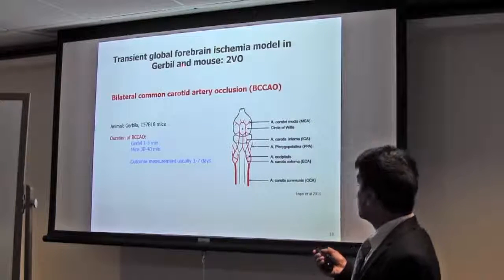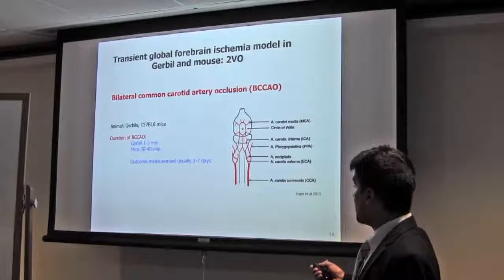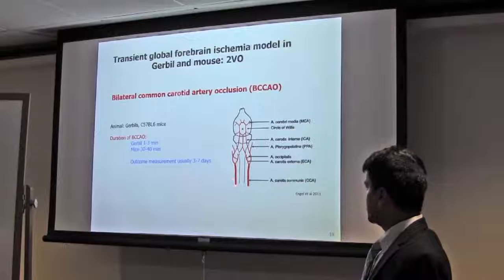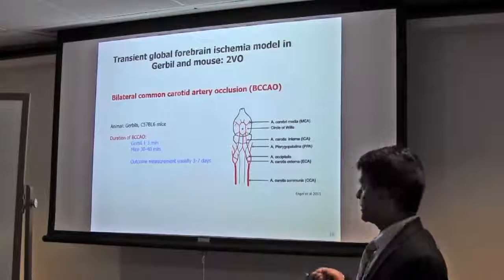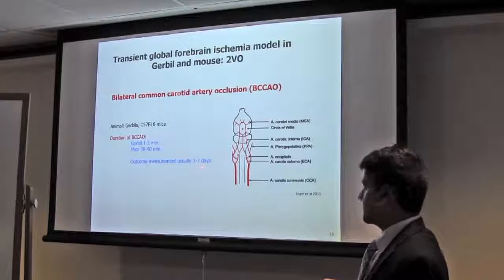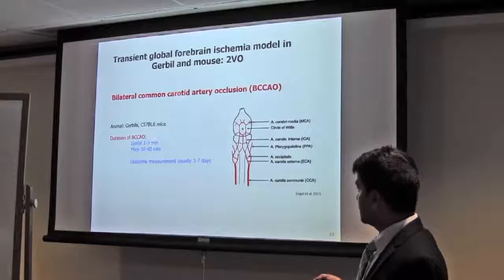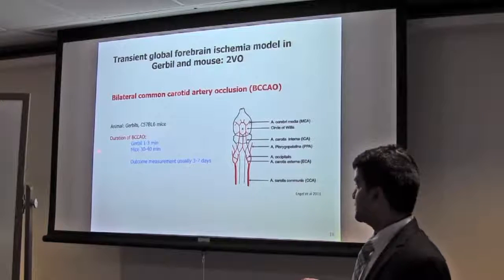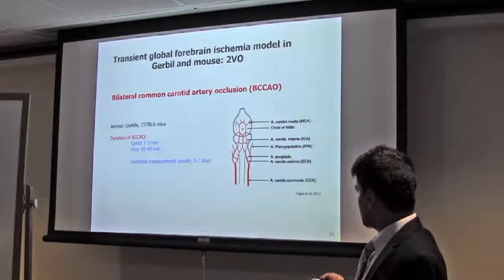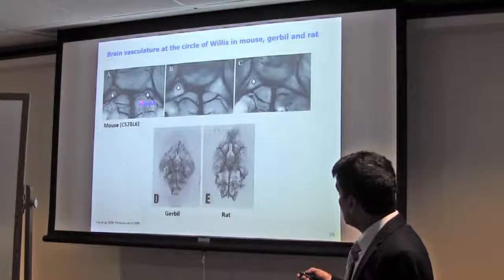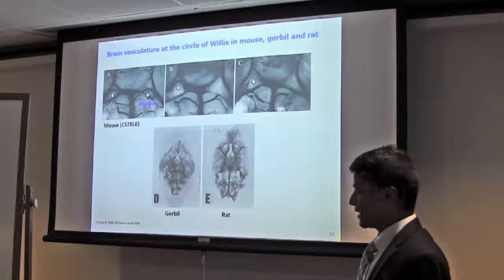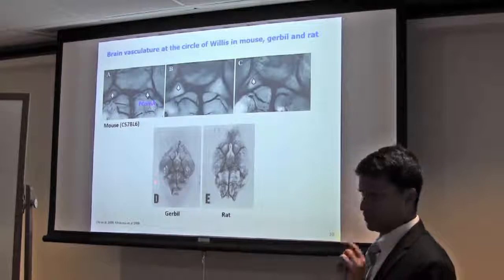For modeling transient global forebrain ischemia, we can do in gerbil, mouse, or rat - mainly 2VO (two vessel occlusion) is popular in gerbil and mouse. When you occlude these two carotid arteries, it can be incomplete but global ischemia. You can measure the outcome three to seven days later. But there is difference in ischemia time. In gerbil, one to three minutes is enough. But in mice, you need more time, like 30 to 40 minutes - huge difference because there is circle of Willis. In case of gerbil, the posterior communicating artery (PCOM) is absent, so there is no collateral flow from basilar or vertebral artery. Very short time is enough for gerbil.